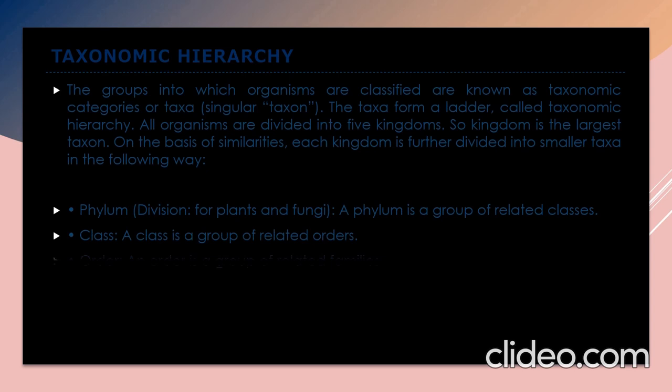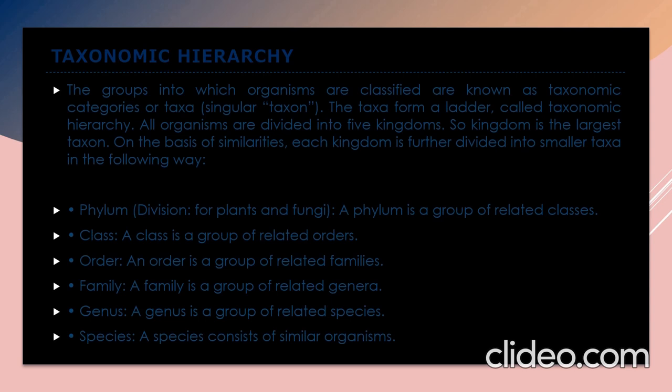The groups into which organisms are classified are known as taxonomic categories or taxa. These taxa form a ladder called the taxonomic hierarchy. All organisms are divided into five kingdoms, so kingdom is the largest taxon. On the basis of similarities, each kingdom is further divided into smaller taxa.